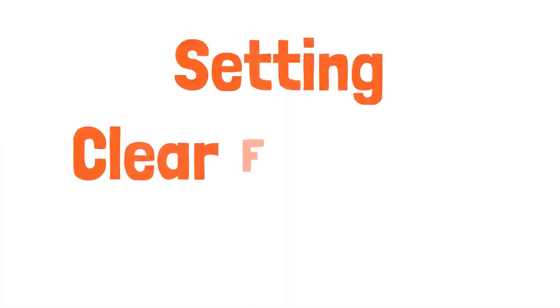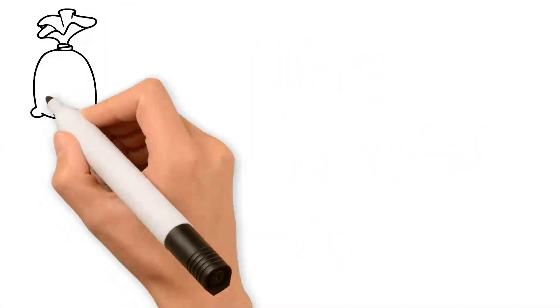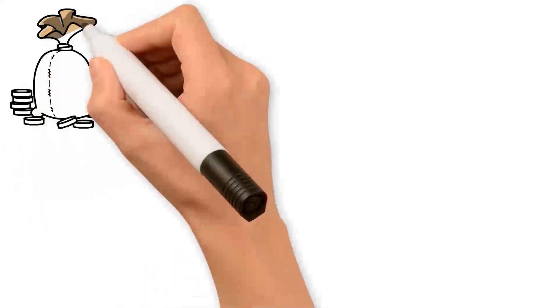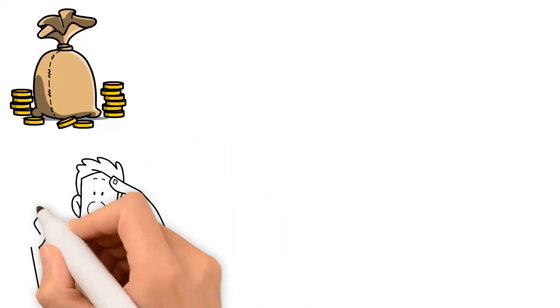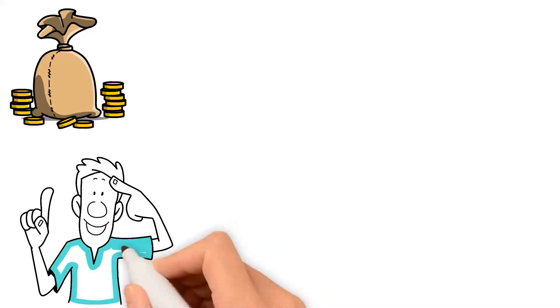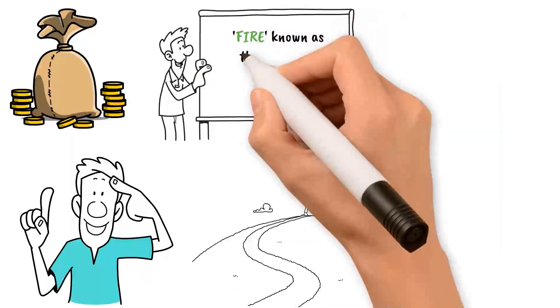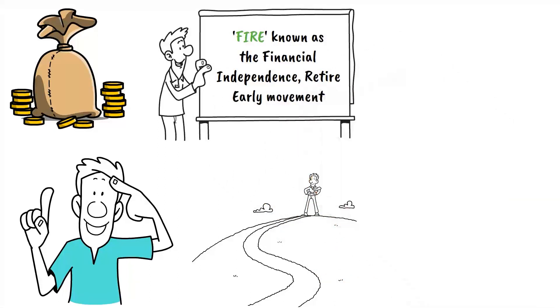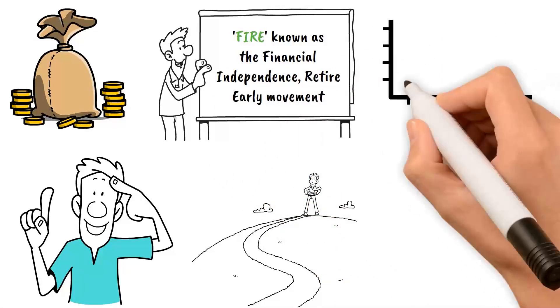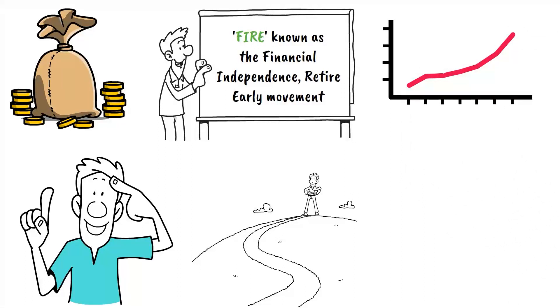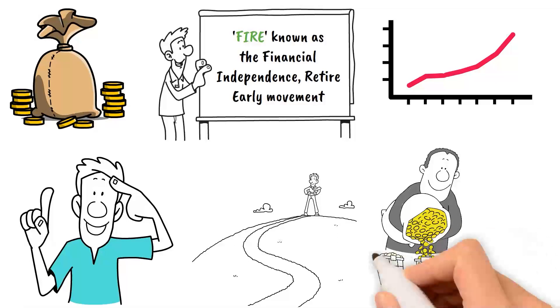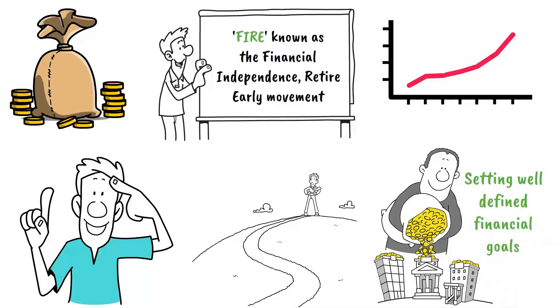Setting clear financial goals. Setting clear and achievable financial goals is the cornerstone of any successful minimalist financial strategy. Understanding what is essential to you allows you to start aligning your spending patterns with your basic beliefs and your long-term financial goals. This is not about deprivation, but about making informed decisions that move you closer to your goals.